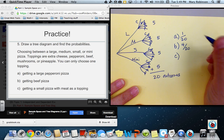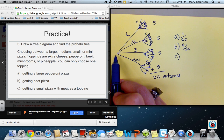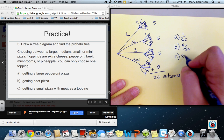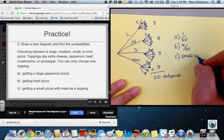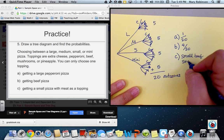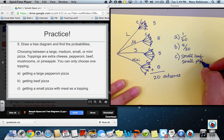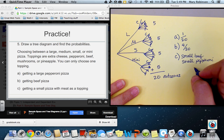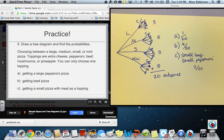For small with meat as a topping, you could get a small with beef or a small with pepperoni. So, therefore, there are two options out of the 20. And that is finding probability from a tree diagram.